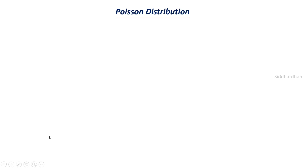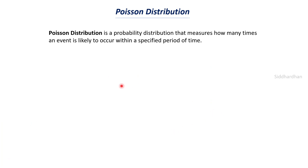First of all, let's try to understand what is meant by a Poisson distribution. This is the formal definition: a Poisson distribution is a probability distribution that measures how many times an event is likely to occur within a specified period of time. So there is a specific time period and some event that is happening repeatedly. For example, we take a time duration of one hour and an event happens 14 times in that hour — this type of distribution is called a Poisson distribution.